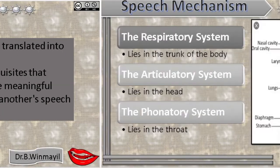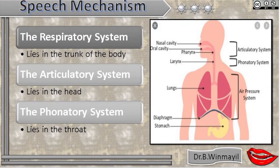There are three speech systems. The first one is the respiratory system — it lies in the trunk of the body. Secondly, we have the articulatory system — it lies in the head of the human being. Thirdly, we have the phonatory system, which lies in the throat.